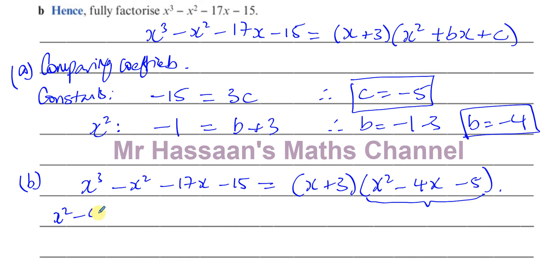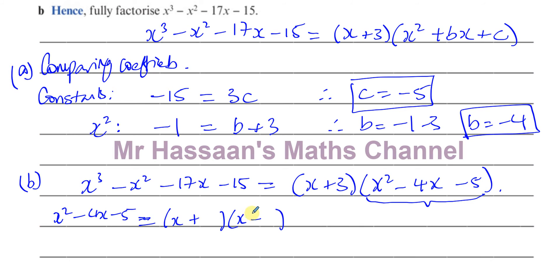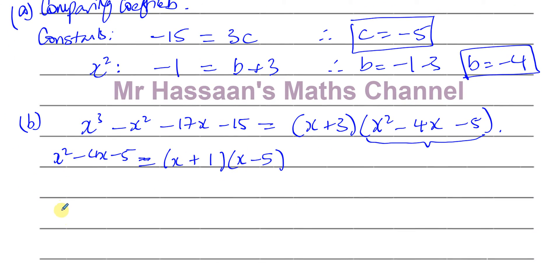To fully factorize we need to factorize x squared minus 4x minus 5 further. We need two numbers that multiply to give negative 5 and add to give minus 4. One must be positive and one negative; the pair must be 1 and 5, with the 5 being negative. So x squared minus 4x minus 5 factorizes as (x plus 1)(x minus 5).